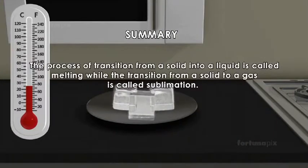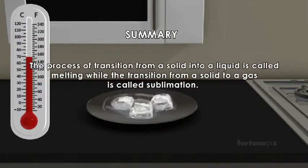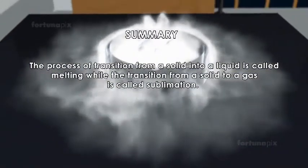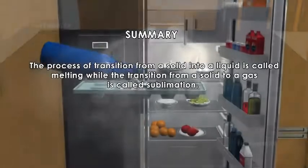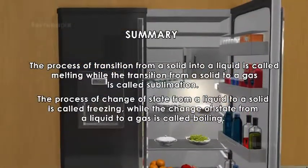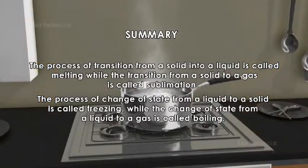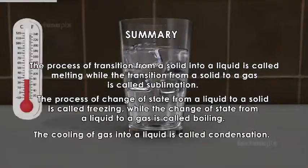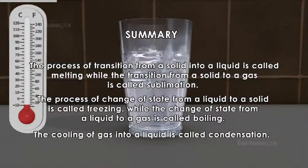Summary: The process of transition from a solid into a liquid is called melting, while the transition from a solid to a gas is called sublimation. The process of change of state from a liquid to a solid is called freezing, while the change of state from liquid to a gas is called boiling. The cooling of a gas into a liquid is called condensation.